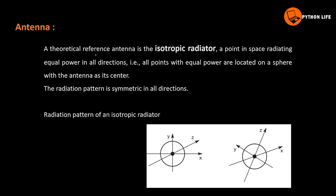The theoretical reference antenna is the isotropic radiator. Theoretically, it is an isotropic radiator — a point in space radiating equal power in all directions. This isotropic radiator means the power in the electromagnetic waves is equal in all directions. All points with equal power are located on a sphere with the antenna as its center.